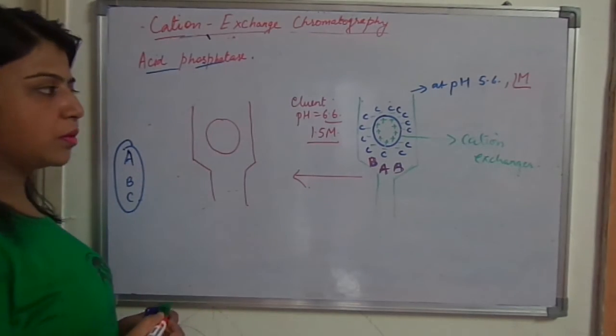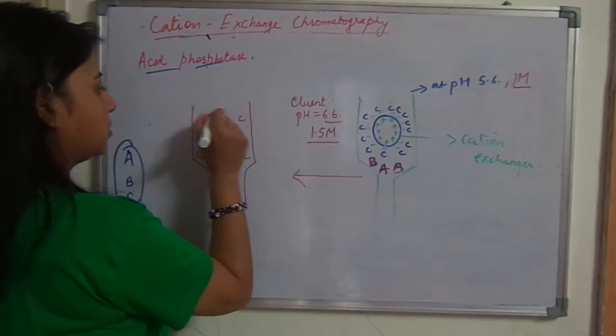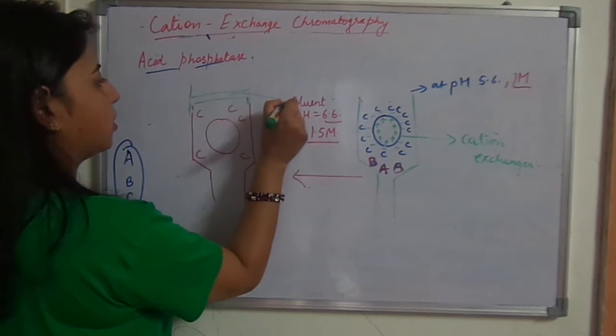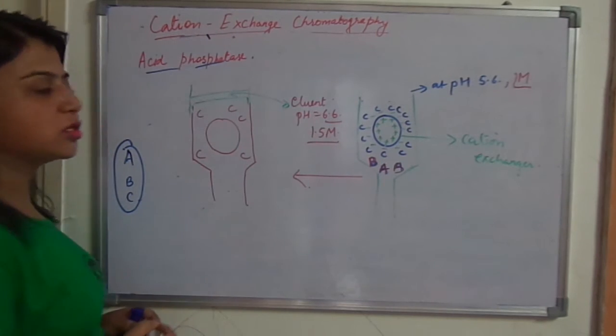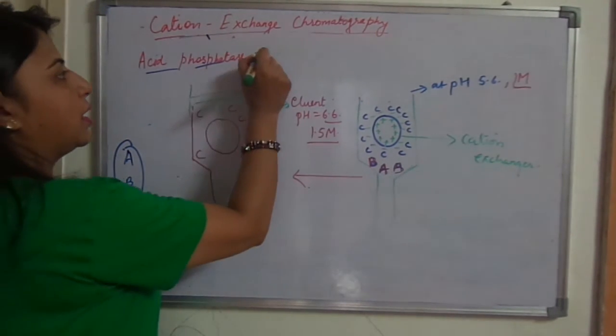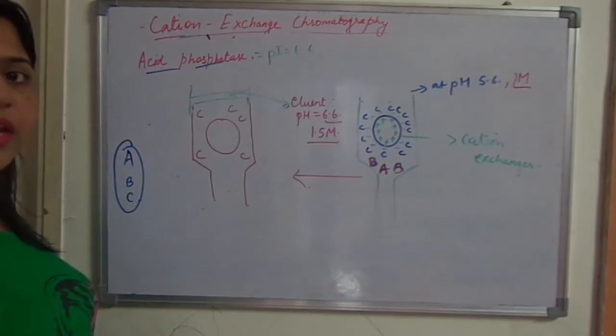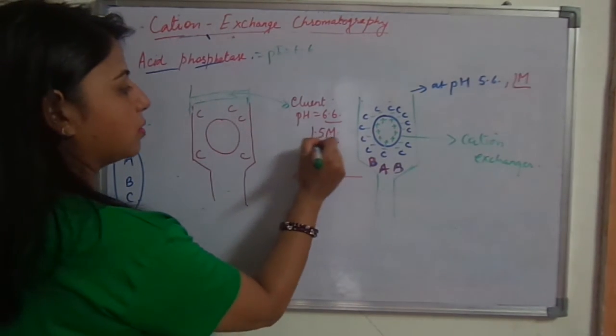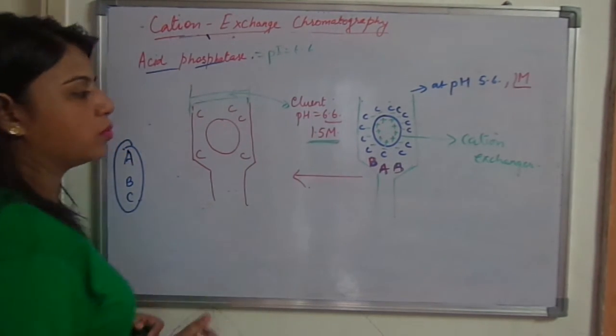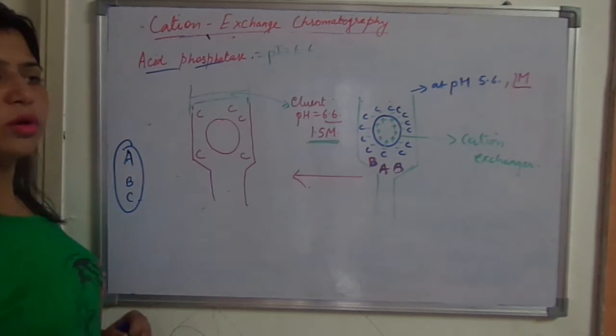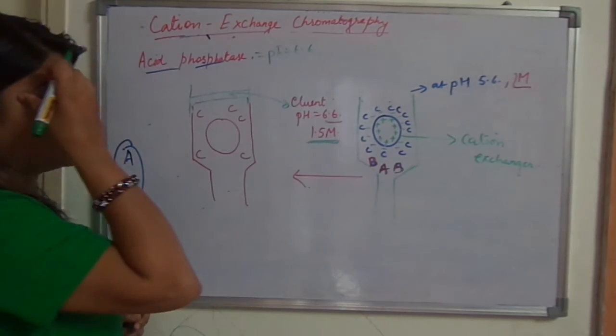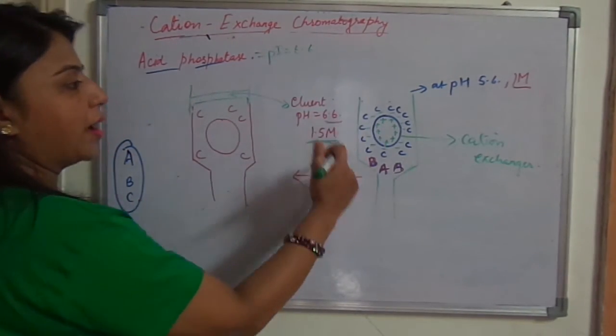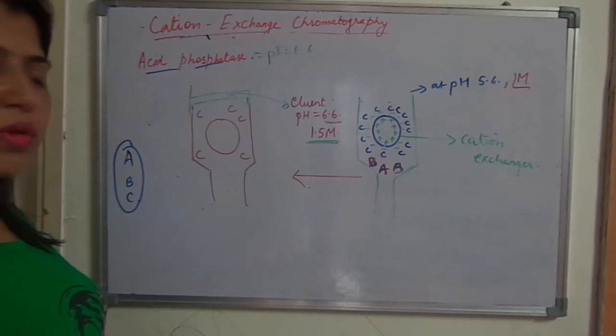So what will happen? This is the bead. And from this bead C is totally separated out. And what was there? We had provided an eluent. We had provided this eluent over here at pH 6.6. Now 6.6 is the pI of acid phosphatase. So at pI this C will be separated from the bead. So what will bind to the bead now? This 1.5 molar buffer that we have added or whatever binds. But C will not bind because C is now neutral. It is at pH 6.6. And remember this pH is higher than this pH. In cation exchanger we use an eluent at higher pH compared to the pH of the sample.